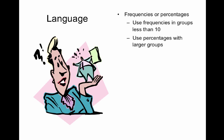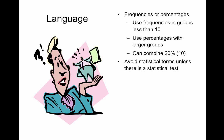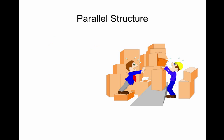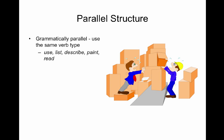You can combine percentages and frequencies by putting the percent first and the frequency in parentheses. Avoid statistical terms unless there is a statistical test — for example, correlated, significant, or other statistical terms. Always properly cite other people's works and ideas. When quoting, always provide a citation and a page number. Avoid the excessive use of quoted materials. In lists especially, you should use words that are grammatically parallel — in other words, using the same verb type, such as use, list, describe, and paint versus using, listing, describing, and painting.